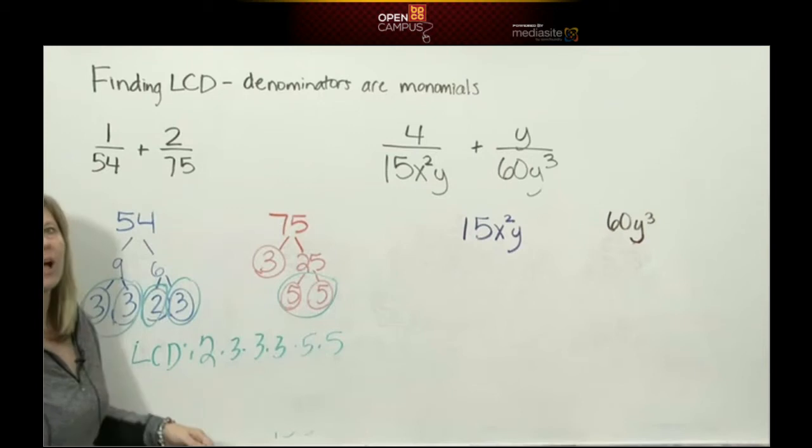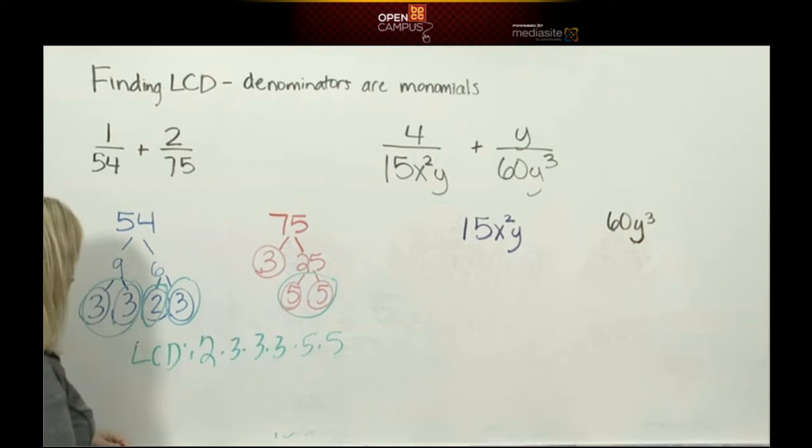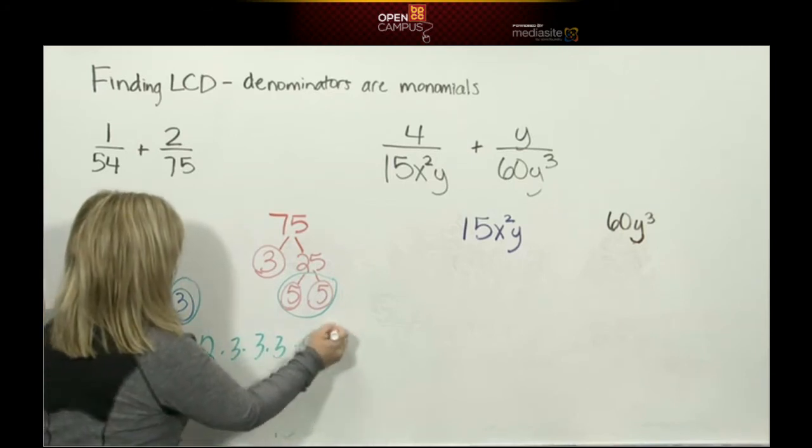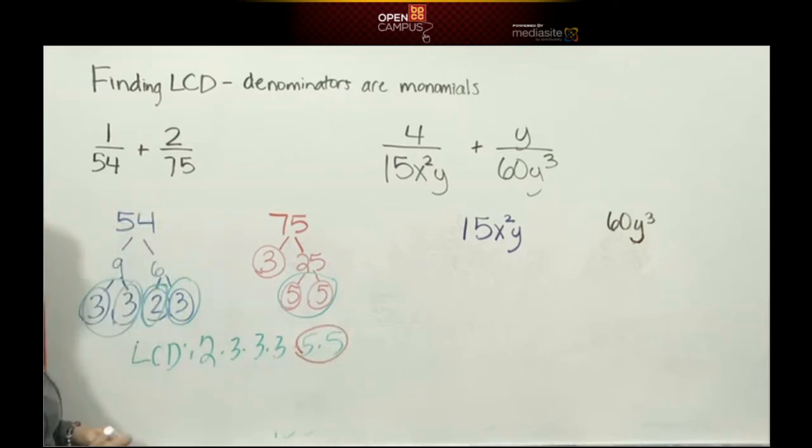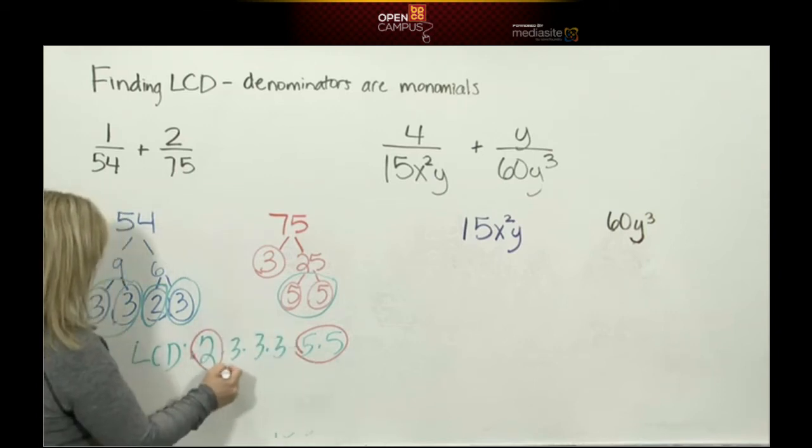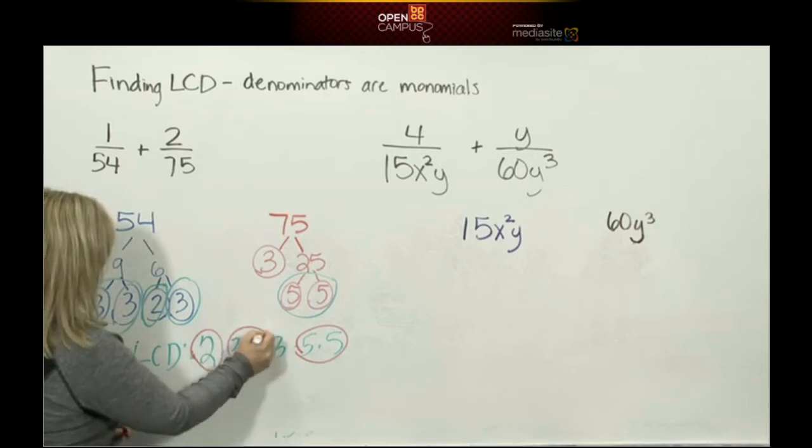Now if we multiply these prime numbers together, we'll have our least common denominator. We don't have to multiply in this order, so I'm going to use the commutative property. Off the top of my head, I know 5 times 5 is 25, and 25 times 2 is 50. So I know that's a 50. I know 3 times 3 is 9.